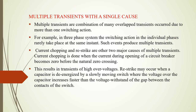Multiple transients, as the name suggests, are a combination of many overlapping transients occurring from more than one switching action. For example, in a three-phase transmission system, switching actions in individual phases occur at the same instant, producing multiple transients. Current chopping and restriking are also major causes of multiple transients. Current chopping occurs when the current during the opening of a circuit breaker becomes zero before the natural zero crossing, resulting in high overvoltages. Restriking may also occur when a capacitor is de-energized and the voltage across the capacitor increases faster than the voltage withstand of the gap between the switch contacts.